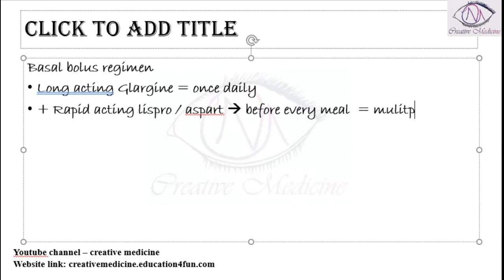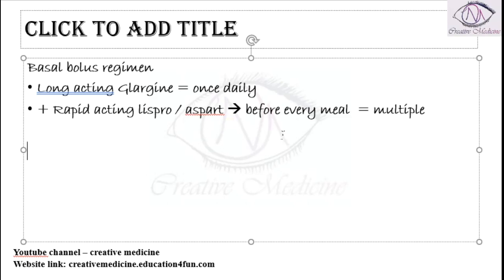Glargine is long-acting and lispro and aspart are rapid-acting. The rapid-acting insulins peak in approximately 1.5 hours, whereas long-acting glargine acts for around 18 to 24 hours. Because glargine is present for 24 hours, once-a-day dosing is sufficient.